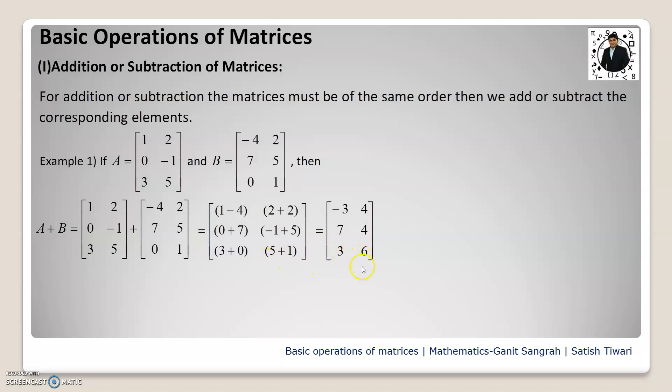If you observe here, the order of the resultant matrix A plus B is again the same as the order of A and B. So the resultant matrix always has the same order as the original matrices.